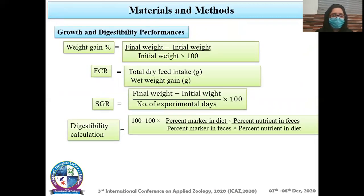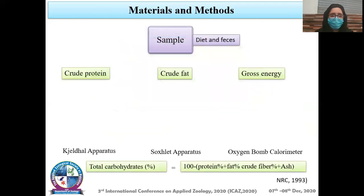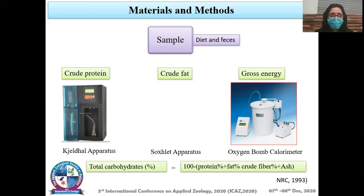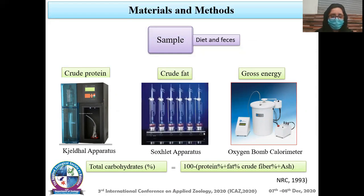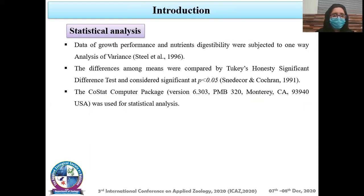These are the growth and digestibility performance formulas: weight gain percentage, feed conversion ratio (FCR), specific growth rate (SGR), and digestibility calculation formula. Samples of feed and feces were analyzed using the following apparatus: gross energy determined by oxygen bomb calorimeter, crude protein determined by Kjeldahl apparatus, and crude fat determined by Soxhlet apparatus. Data of growth performance and nutrient digestibility were subjected to one-way analysis of variance (ANOVA). Differences among means were compared using Tukey's significant difference test, with significance set at p < 0.05. Co-stat computer software was used for statistical analysis.